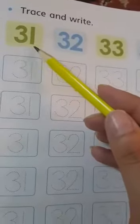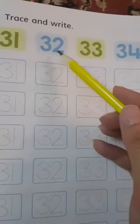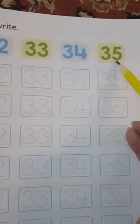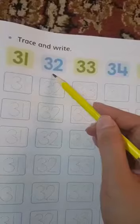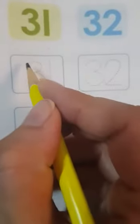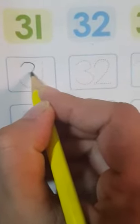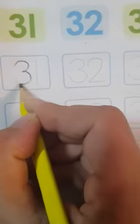First we will read these numbers, then we will trace them. Let's start: 31, 32, 33, 34, 35. Now we are going to trace them like this. Hold your pencil nicely. This is 3 and this is 1, making 31.